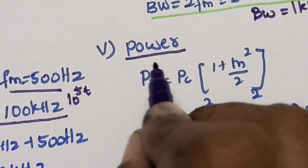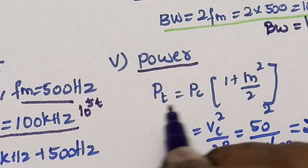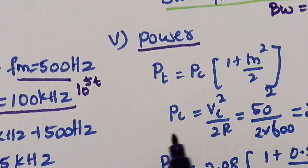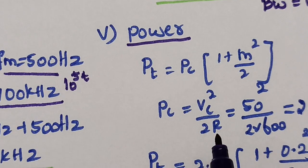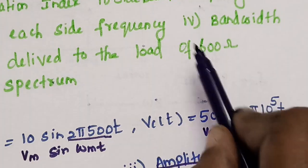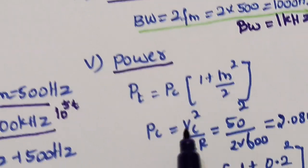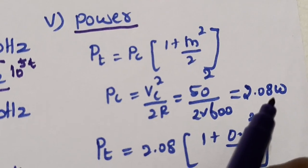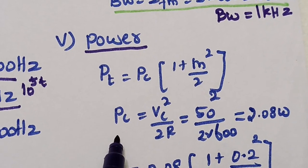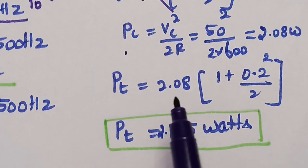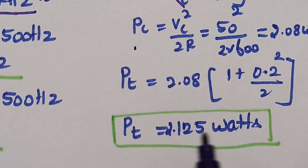Next we find the total power delivered to the load. The formula is pt = pc·(1 + m²/2), where pc is the carrier power given by vc²/(2R). With vc = 50 and R = 600 ohms, pc = 50²/(2×600) = 2.08 watts. Substituting pc and m = 0.2 into the total power equation gives pt = 2.125 watts.